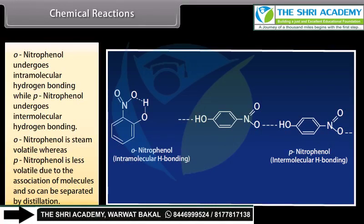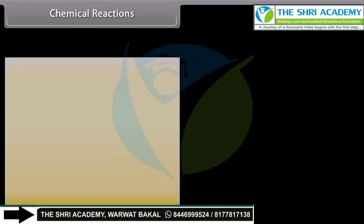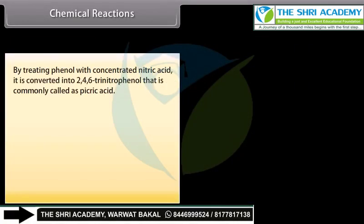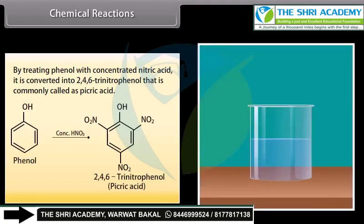Ortho-nitrophenol is steam-volatile whereas para-nitrophenol is less volatile due to the association of molecules, and so can be separated by distillation. By treating phenol with concentrated nitric acid, it is converted into 2,4,6-trinitrophenol, commonly called picric acid.